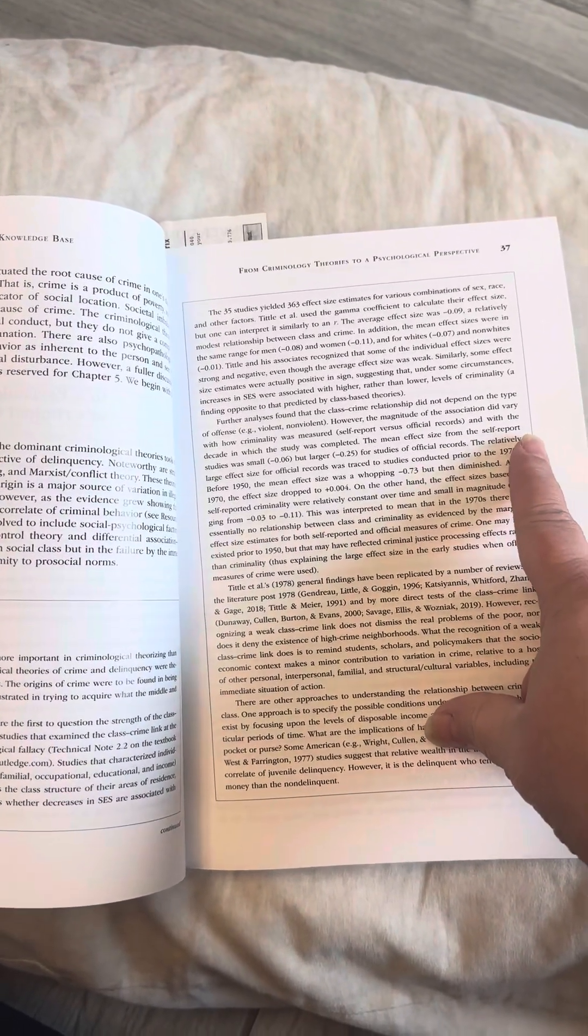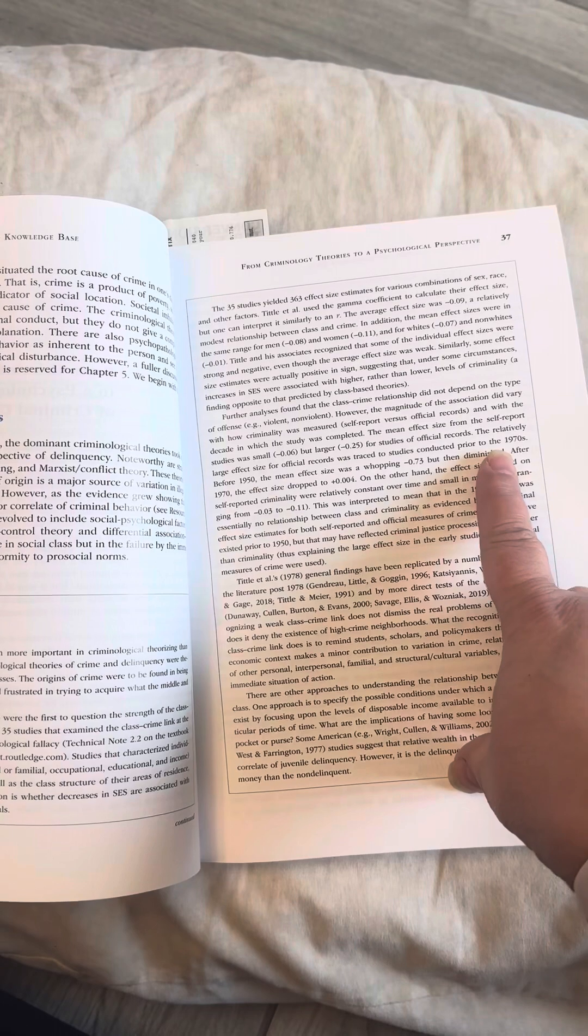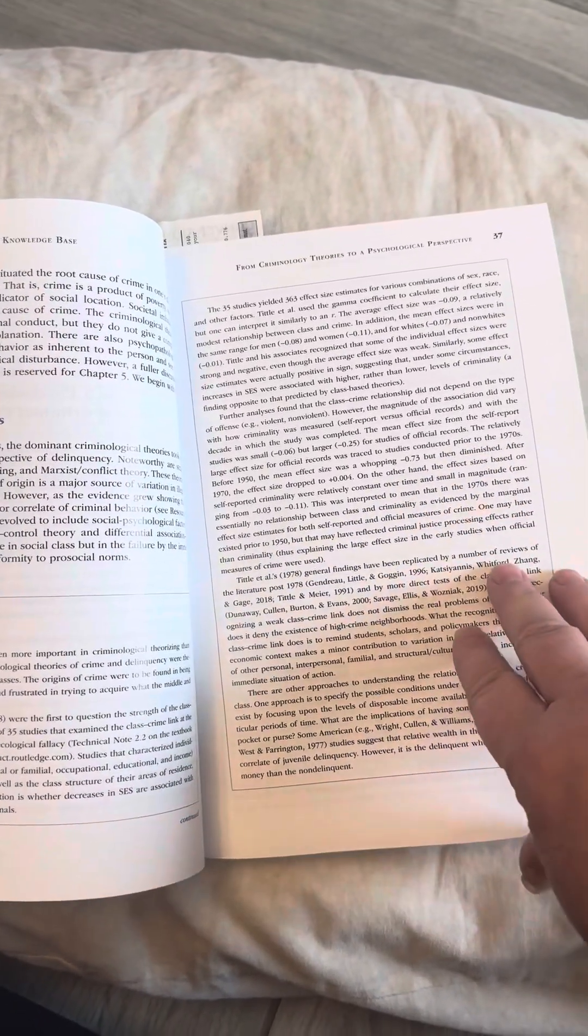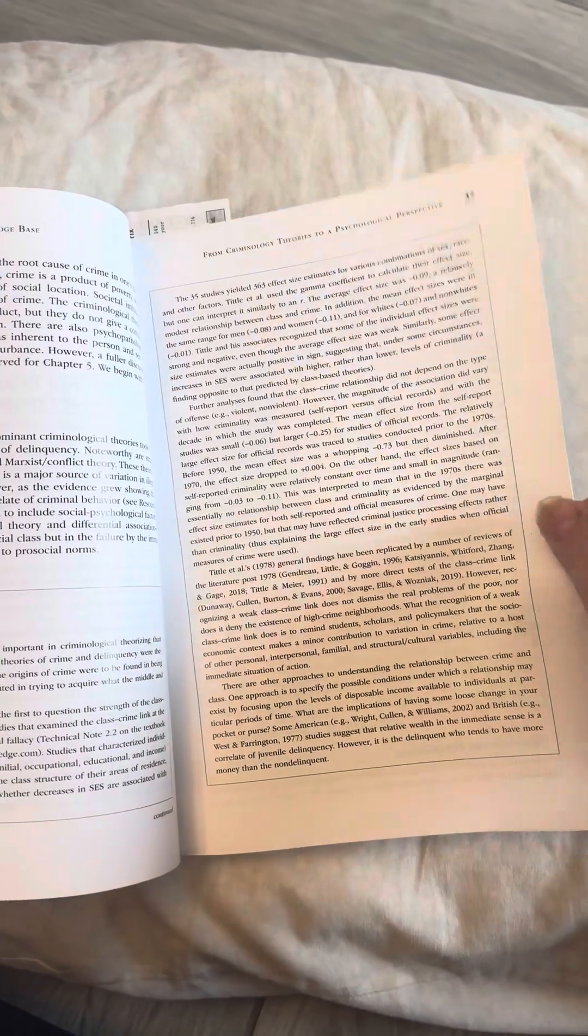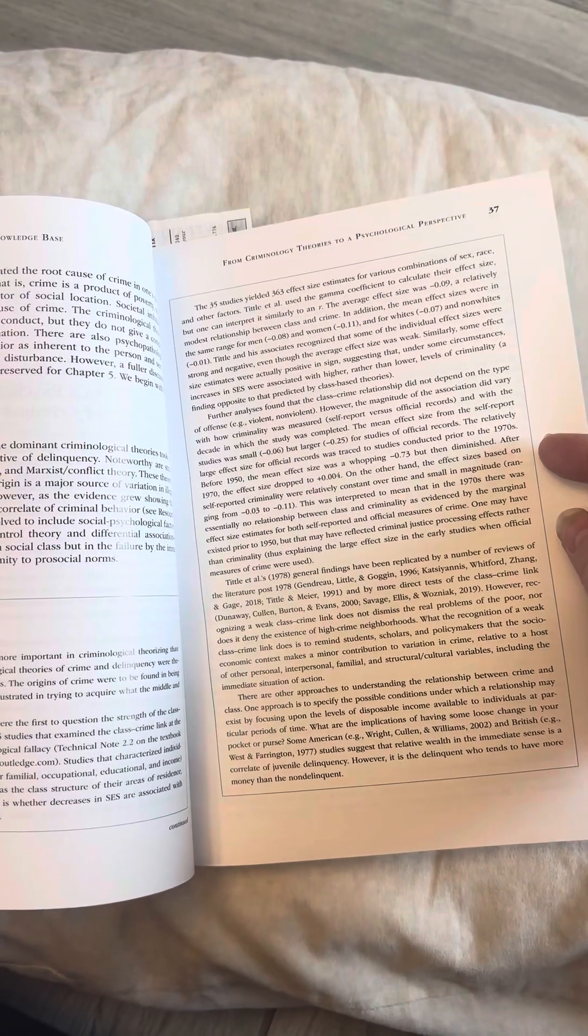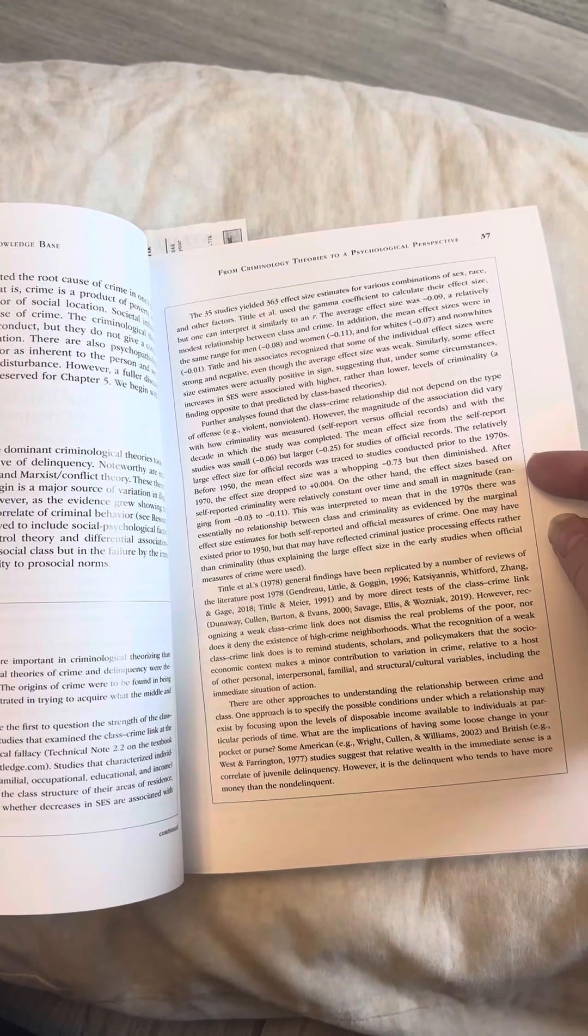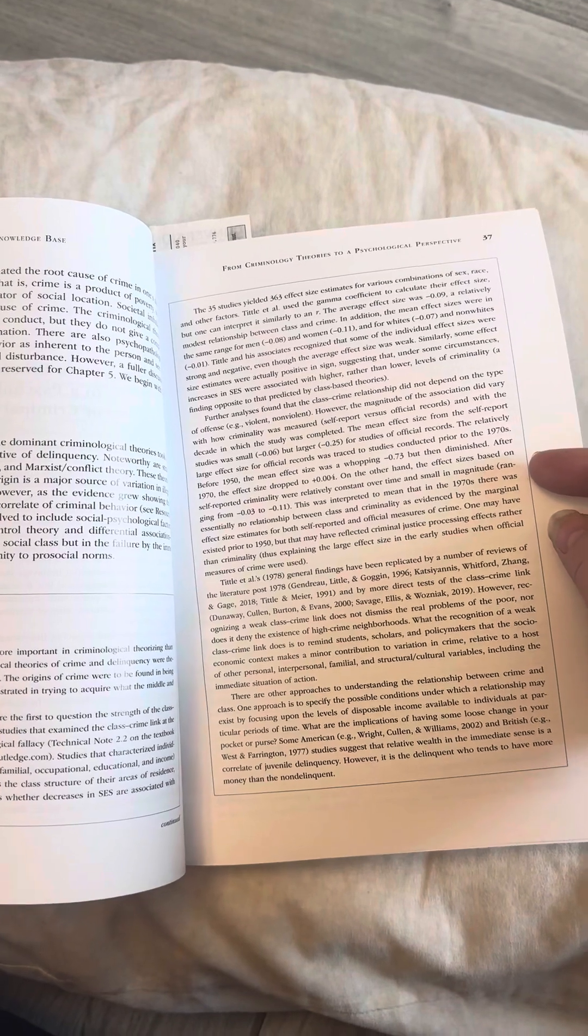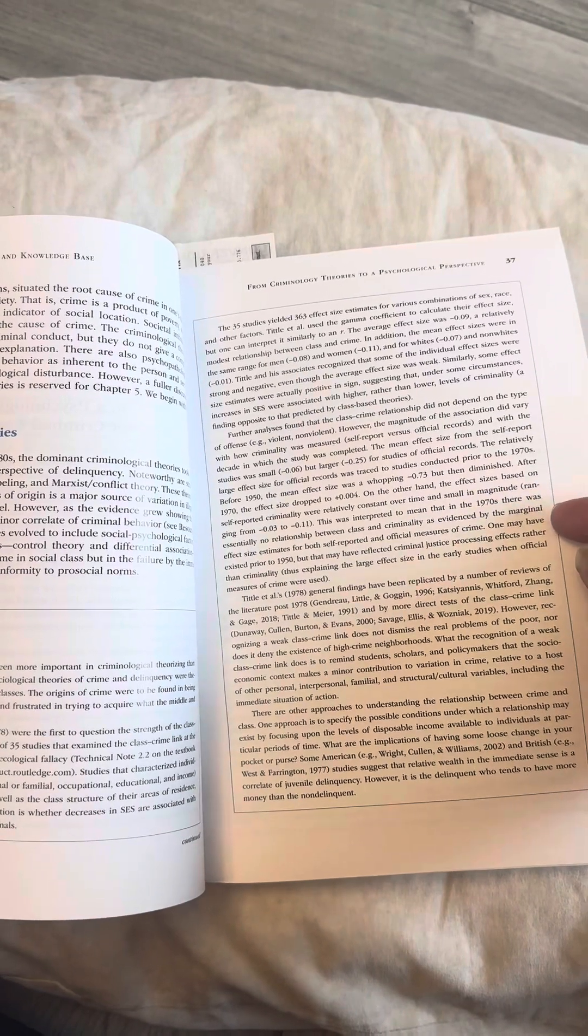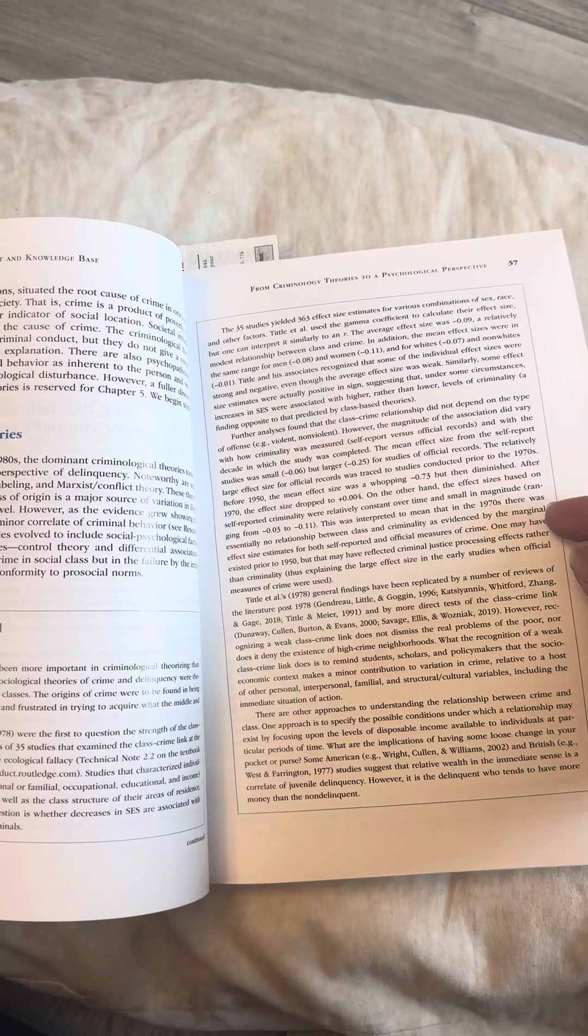Further analysis found that the class-crime relationship did not depend on the type of offense. However, the magnitude of the association did vary with how criminality was measured, self-report versus official records, and with the decade in which the study was completed. The mean effect size from the self-report studies was small but larger. For studies of official records, the relatively large effect size for official records was traced to studies conducted prior to the 1970s. Before 1950, the mean effect size was a whopping negative 0.73, but then diminished. After 1970, the effect size dropped to positive 0.004.